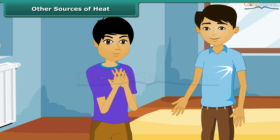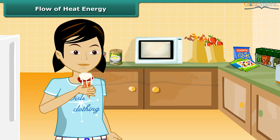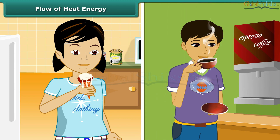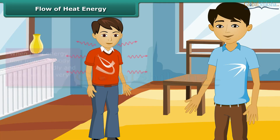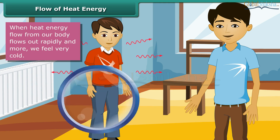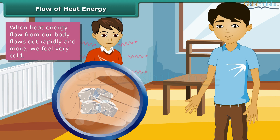Rub the palms of your hands together — you will feel that it is hot. The ancient man generated fire by rubbing two stones. You must have held both ice and a hot cup of coffee. When heat energy from our body flows out rapidly, we feel very cold. This is the case when we hold ice. Ice on the palm gives a sensation of cold because heat from your body flows out to the ice.